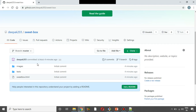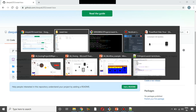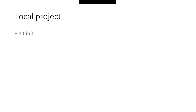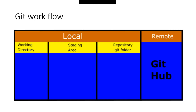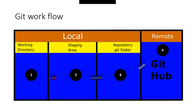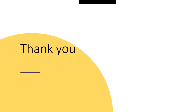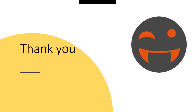We will initialize the local folder and push it. We are going to use git init, git add, git commit, and git remote. Finally, we will push it. The Git workflow is: working directory, git add to staging area, git commit to local repository, and finally push to GitHub. In this tutorial, we discussed the Git workflow. That's all for today — please like and subscribe. Thank you.